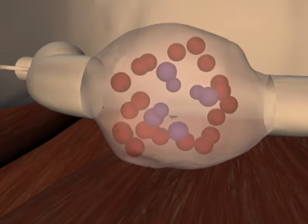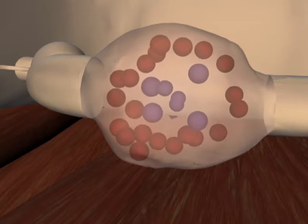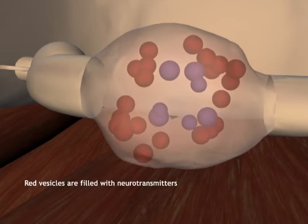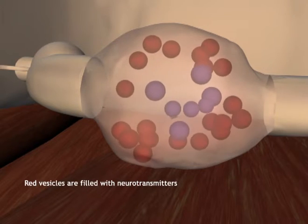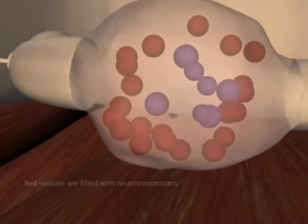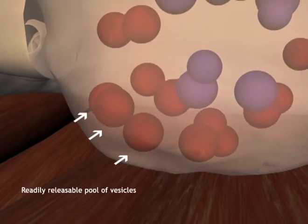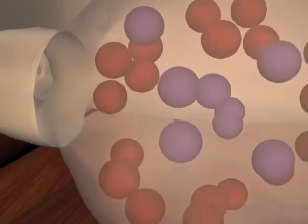Vesicles are spheres of lipid membrane which can be either empty or filled with neurotransmitters. In this scene, the red vesicles are full. Vesicles are thought to cycle. However, a static group can form a readily releasable pool which is thought to be the site of release.